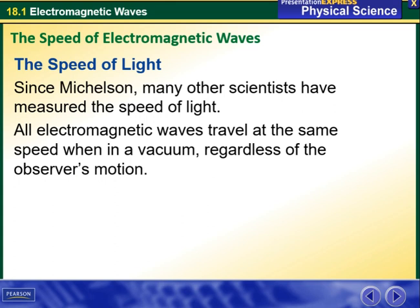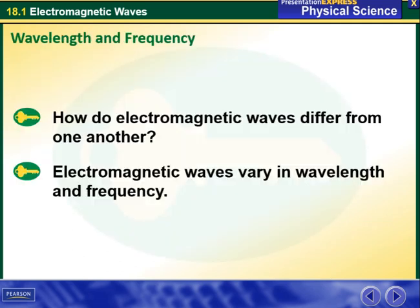Since Michelson, many other scientists have measured the speed of light. All electromagnetic waves travel at the same speed when in a vacuum, regardless of the observer's motion. How do two electromagnetic waves differ from one another? Electromagnetic waves vary in wavelength and frequency.